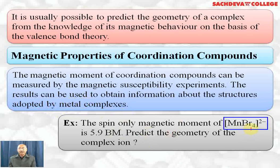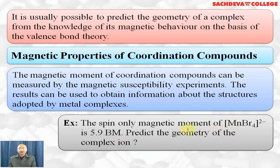The spin-only magnetic moment of [MnBr₄]²⁻ is 5.9 BM. To predict the geometry: Mn (Z=25) has configuration 4s² 3d⁵; Mn²⁺ is 3d⁵, giving 5 unpaired electrons. The magnetic moment = √(5×7) = √35 ≈ 5.9 BM, confirming 5 unpaired electrons in this complex.